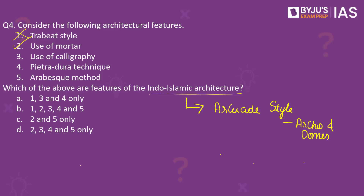The second statement is correct. Calligraphy, pietradura, and arabesque were all notable features of Indo-Islamic architecture. Calligraphy was used as a means of decoration. The pietradura technique involved the inlay of precious stones and gems into stone walls. The arabesque method was used for decoration — specifically, the use of geometrical vegetal ornamentation as a decorative element. Hence, the correct answer is Option D: 2, 3, 4, and 5 only.